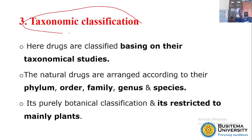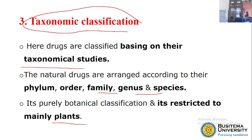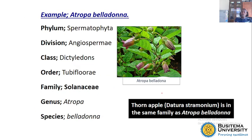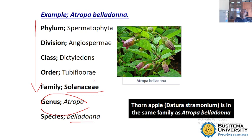The third way to classify natural drugs is taxonomic classification. With taxonomic classification it is only restricted to plants. We depend on the taxonomy of that particular plant — meaning we need to understand the genus, the species, and the family. Certain plants of the same family will always contain particular chemicals. For example, the family Solanaceae — plants in this family always contain alkaloids. An example is Atropa belladonna, which is from family Solanaceae, genus Atropa, and species belladonna.